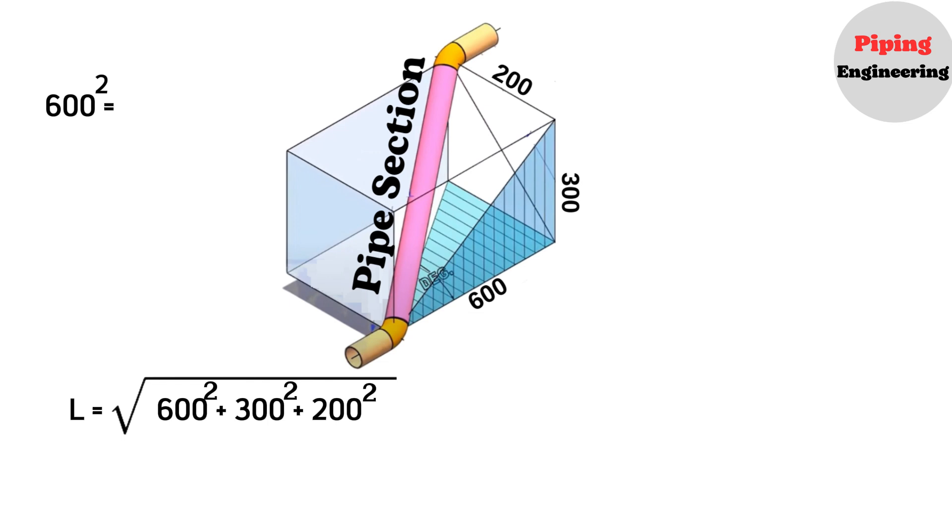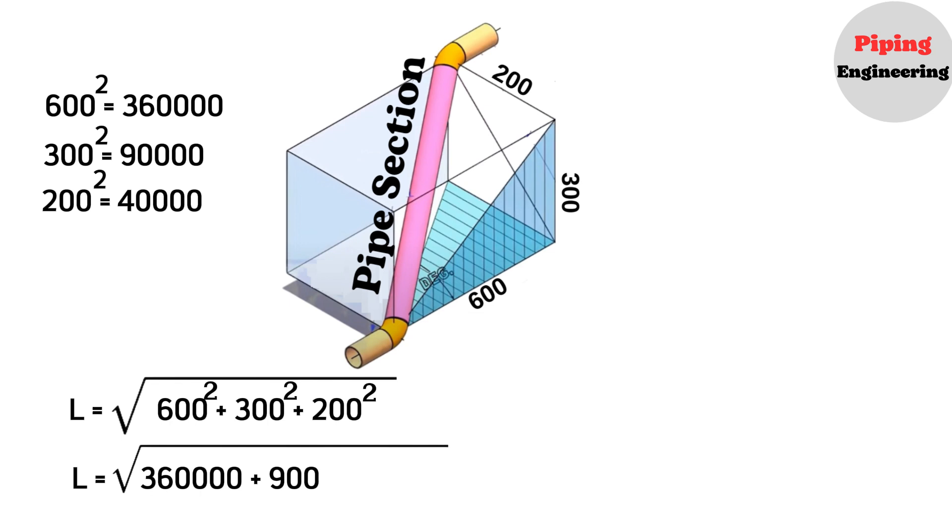600 squared equals 360,000. 300 squared equals 90,000. 200 squared equals 40,000. Now add these results. L equals under root, 360,000 plus 90,000 plus 40,000 equals under root 490,000.